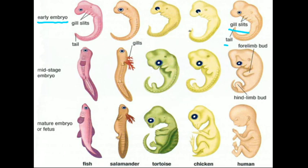All the displayed early embryos have gill slits and a tail. But as they develop, the embryos diverge and start looking a lot different and more similar to their mature forms. Some embryos, like the tortoise, chicken, and human, have completely lost their gill slits.